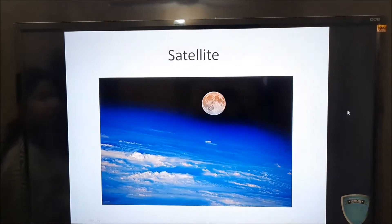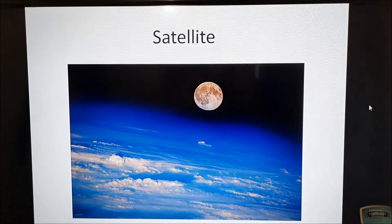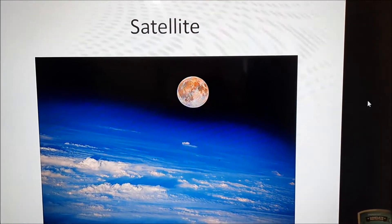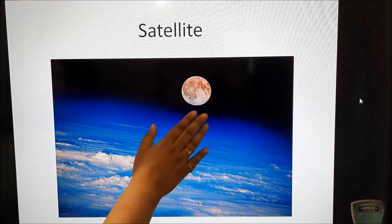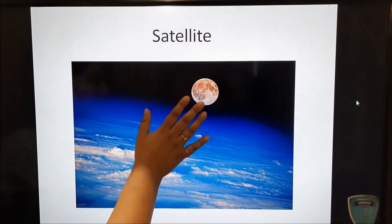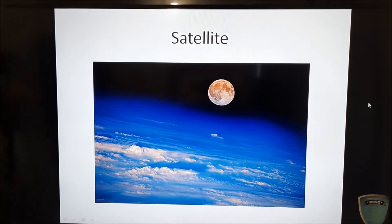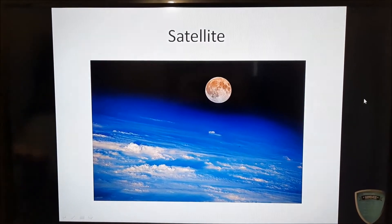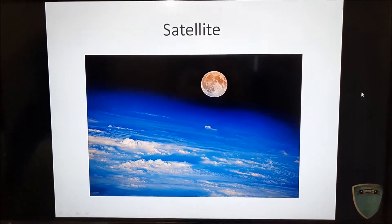Now let us talk about satellite. What are satellites? Satellites are objects that orbit a planet such as moon. So you can see the moon here, right? So this is the planet Earth and moon is a natural satellite which has no light of its own. It reflects the light which it gets from the sun.